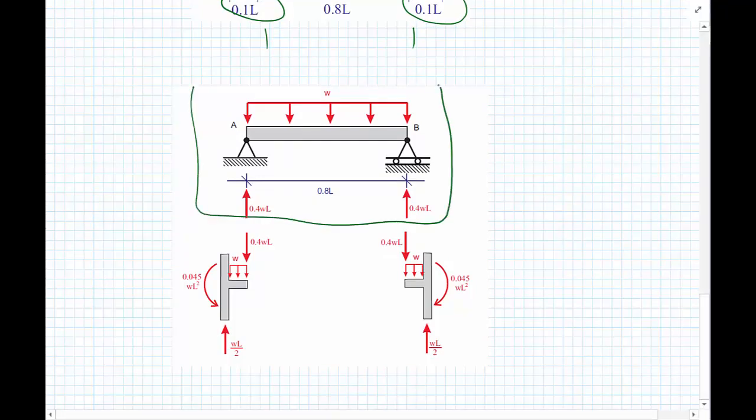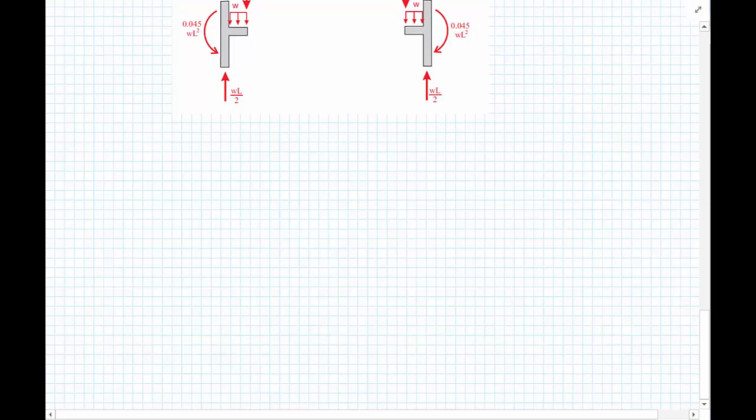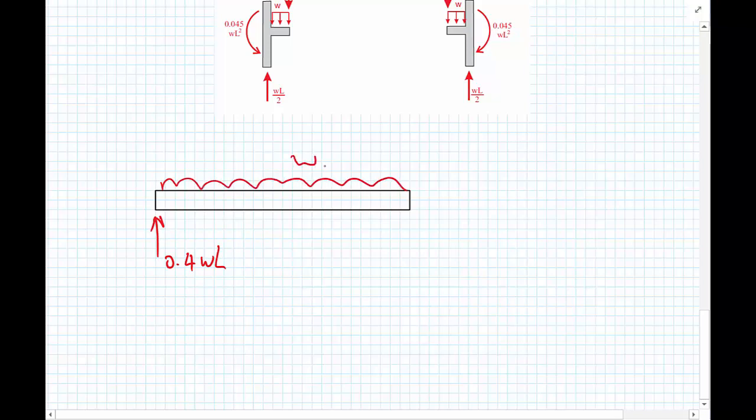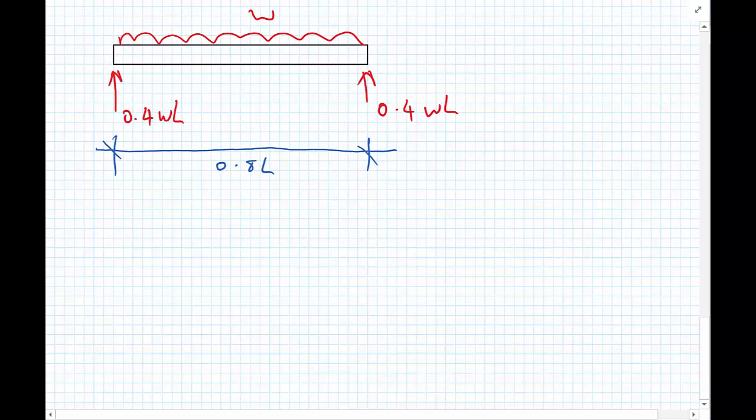So if we take a look now at the bending moment for this section, let's draw the free body diagram. We have reaction 0.4WL. We have the load of W acting upon there. Equal reaction on this side because it's symmetric, 0.4WL, and the dimension which is 0.8L. So we've got the reaction from the sum of the forces in the Y direction.